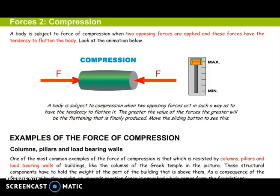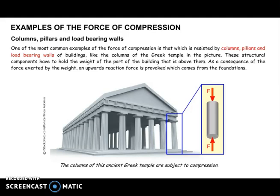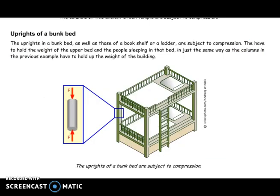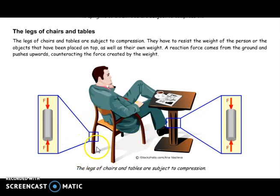A very good example of compression stress are the columns and pillars in every building — they are subjected to compression stress. Another example are the uprights in a bunk bed, which are also subjected to compression stress. If we think about a chair, the legs of the chair have to resist the weight of the person, so they are subjected to compression stress as well.